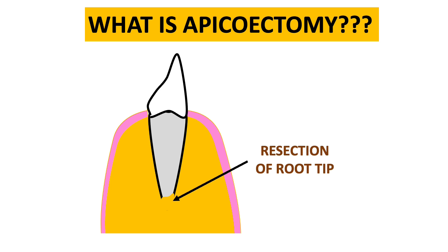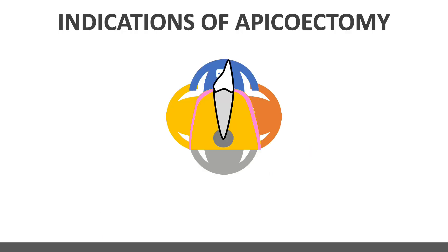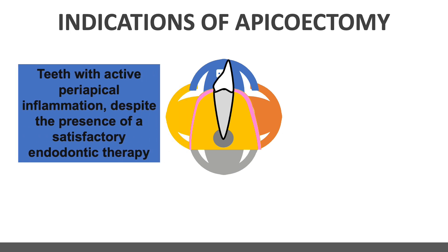We perform apicectomy in cases of periapical infection where periapical infected tissue is present, so that we can prevent further spread of infection in the jawbone or root of the tooth. The first indication is teeth with active periapical inflammation despite satisfactory endodontic therapy — meaning you did a very good RCT but there is still persistent periapical inflammation.